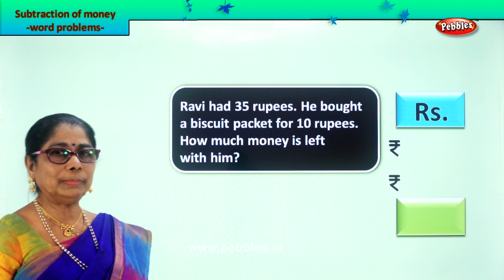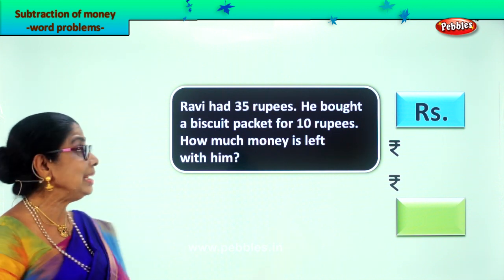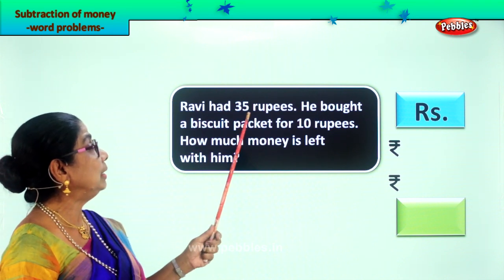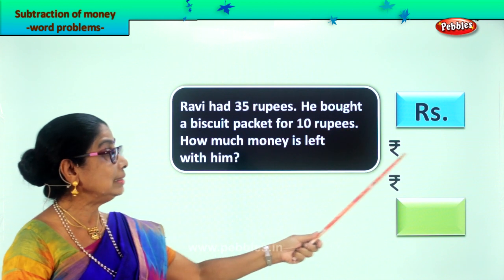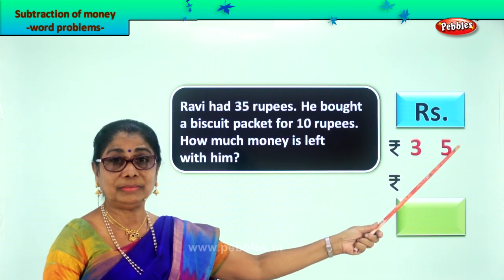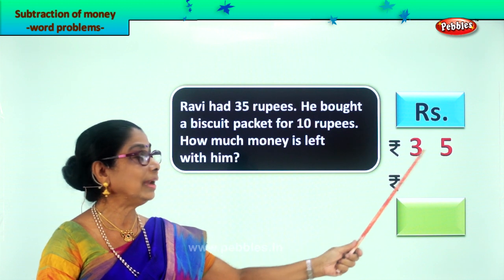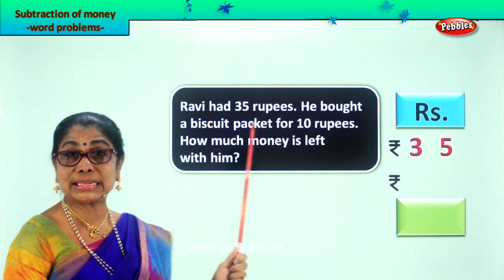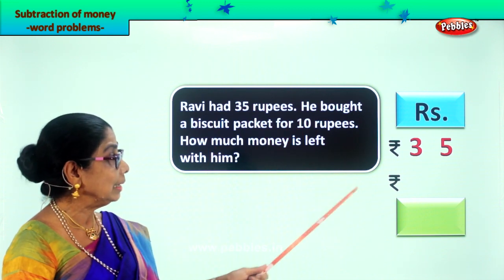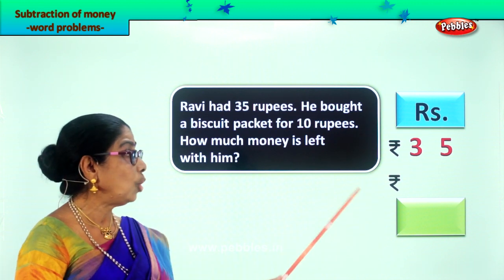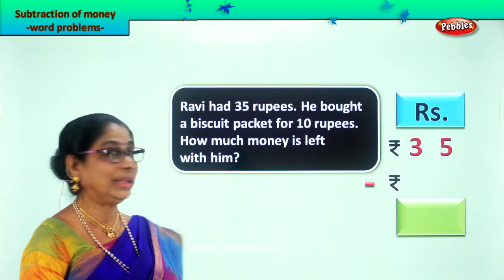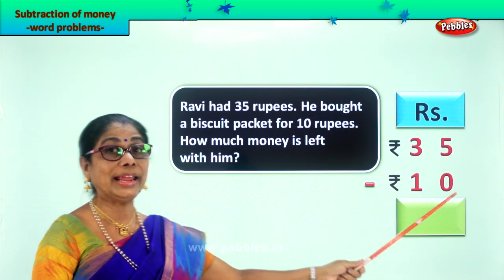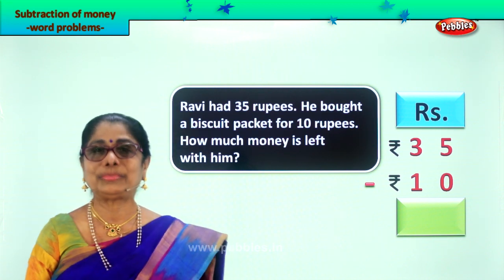He's got some money, bought a biscuit, gives some money to the shopkeeper. Let's see how much money is left with him. Amount Ravi has: rupees 35. Amount spent on a packet of biscuits — remember, money spent, money has — so minus 10 rupees.